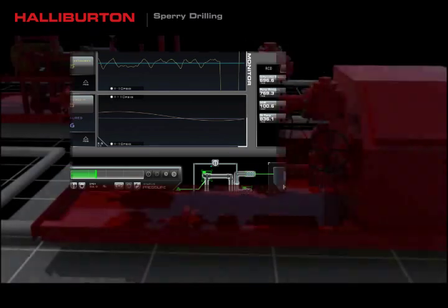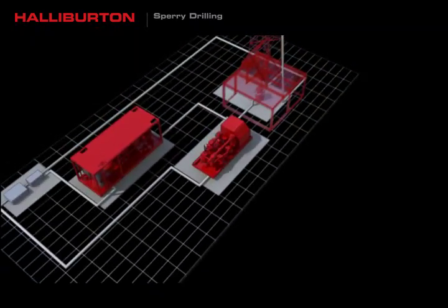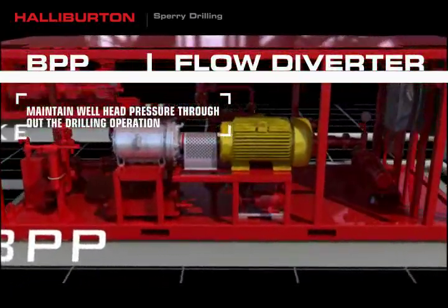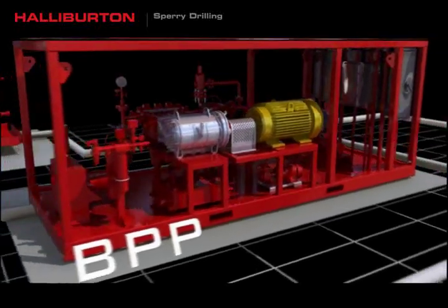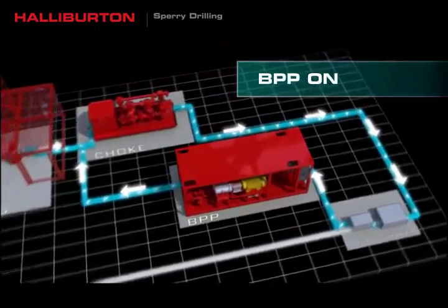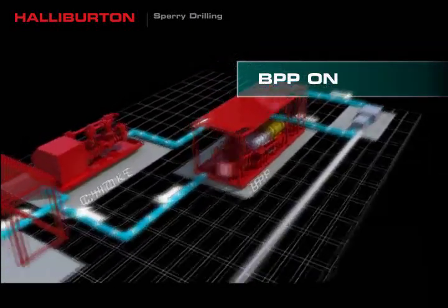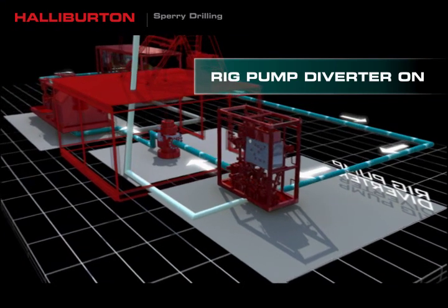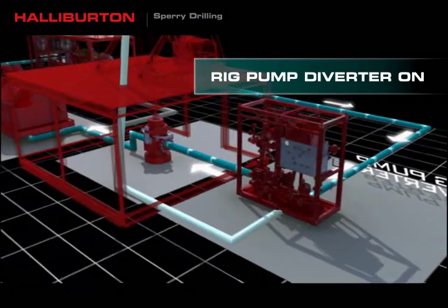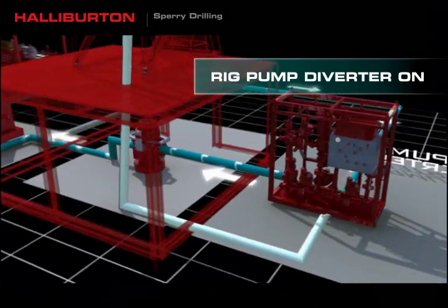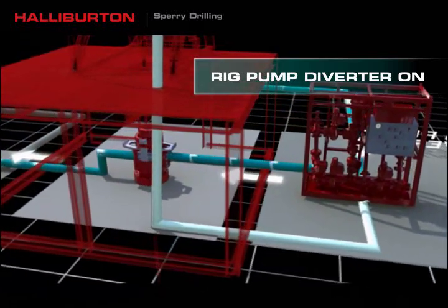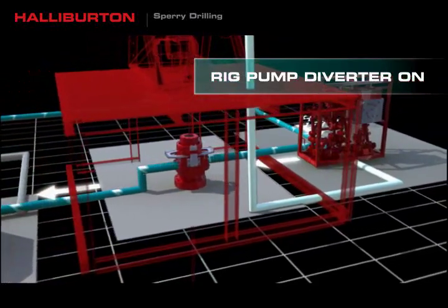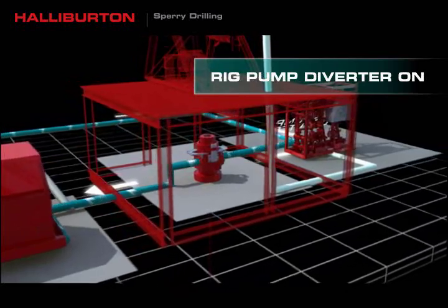To manage wellhead pressure throughout the drilling operation even when rig pumps are off, it is critical to maintain flow through the chokes. Typical managed pressure drilling utilizes a back pressure pump to provide fluid supply and adequate flow. Halliburton's innovative rig pump diverter replaces the back pressure pump — with it, there is no need to stop the rig pumps during connections, as this device reroutes mud flow from the standpipe to the chokes. Its small footprint, ease of installation, and modest electrical power requirements make it ideal for offshore operations. Both the back pressure pump and flow diverter can be operated manually or in automatic mode.